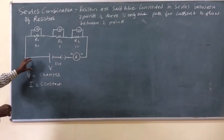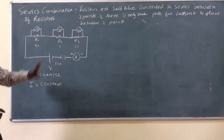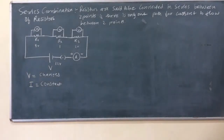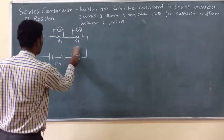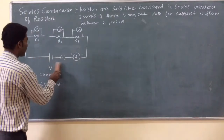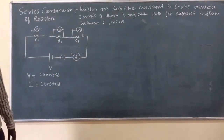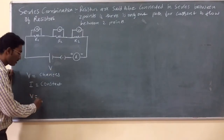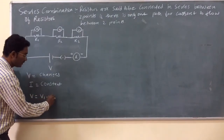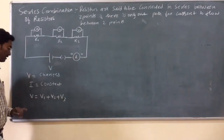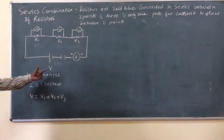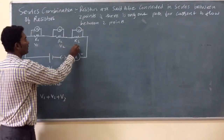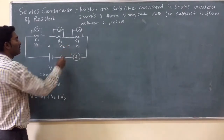But the sum of the potential differences across the three resistors will always be equal to 12 volts, or the main battery voltage. Therefore, the potential difference across the three resistors changes when they are connected in series. So let us remember that potential difference changes, and the first formula will be: V is equal to V1 plus V2 plus V3.